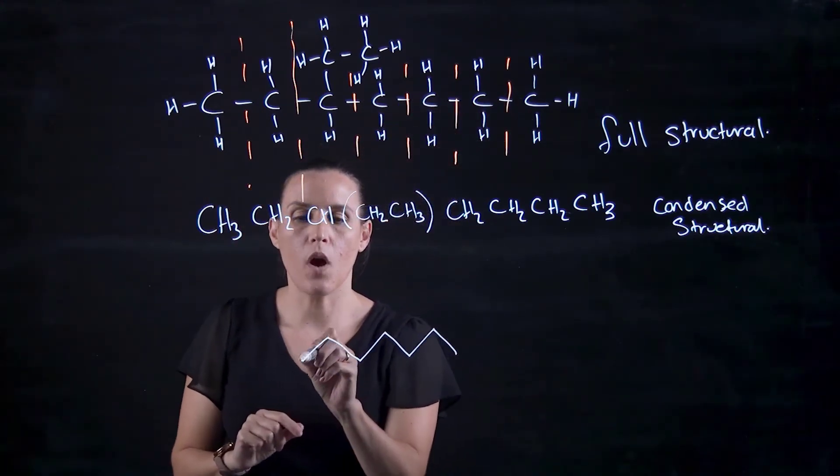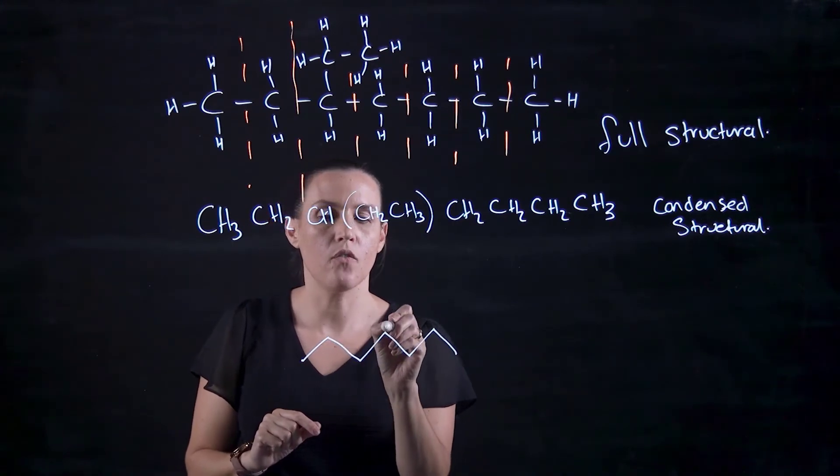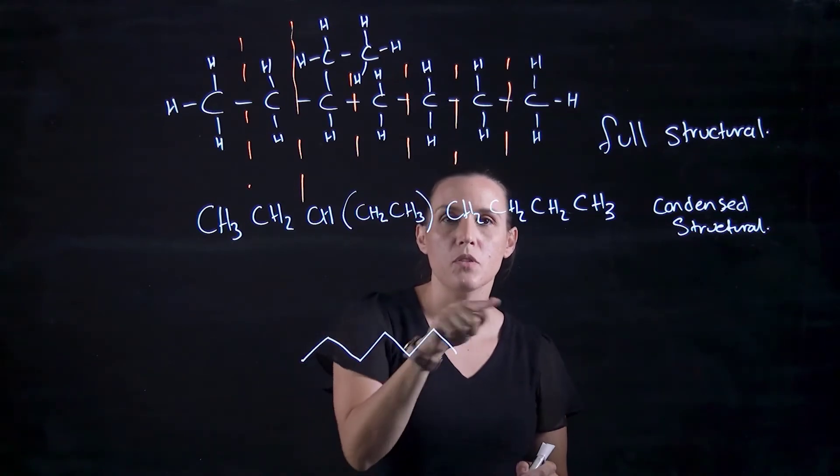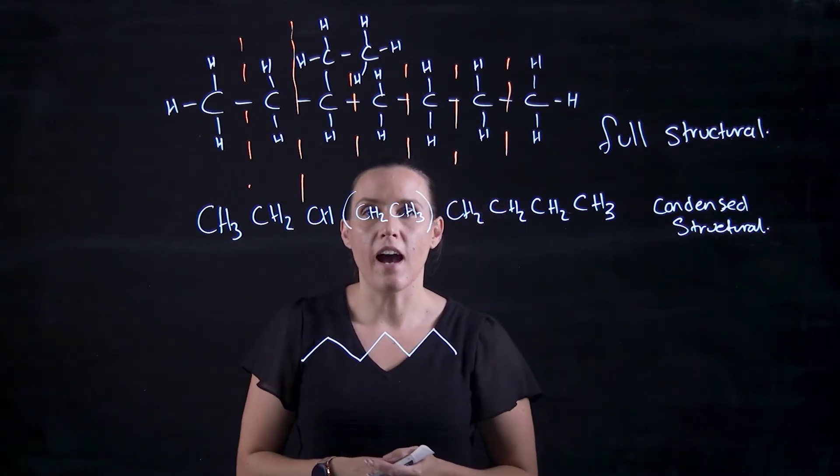So I've got one, two, three, four, five, six, seven carbons, and it's all single bonds between them. So that's an alkane.